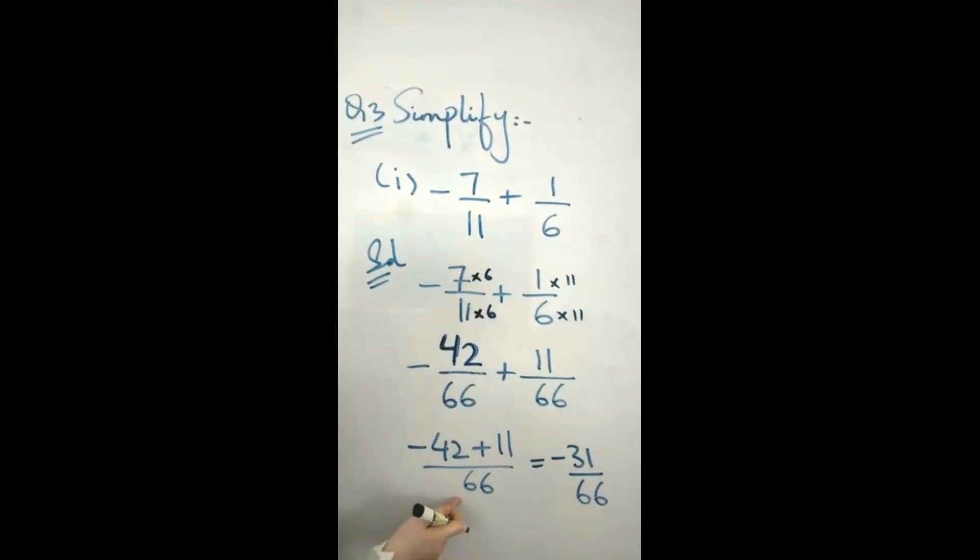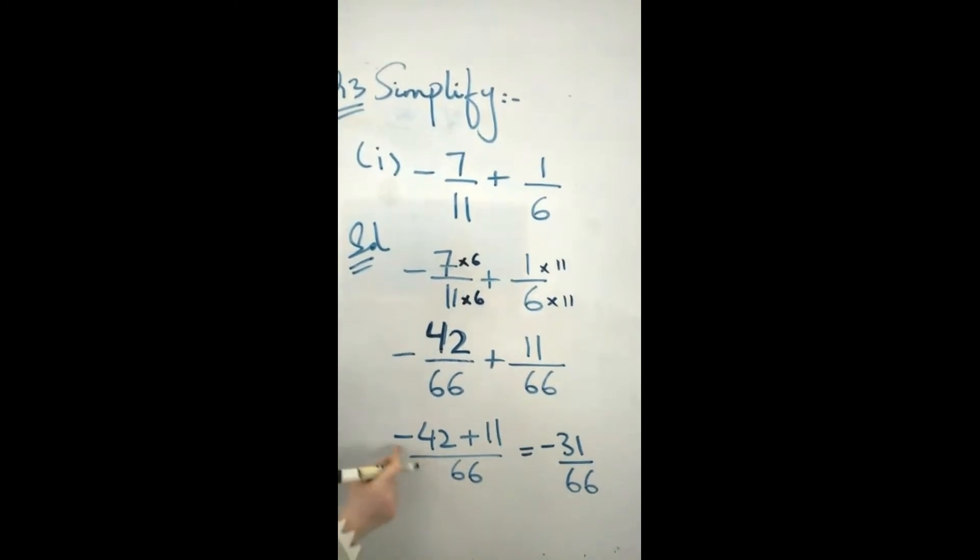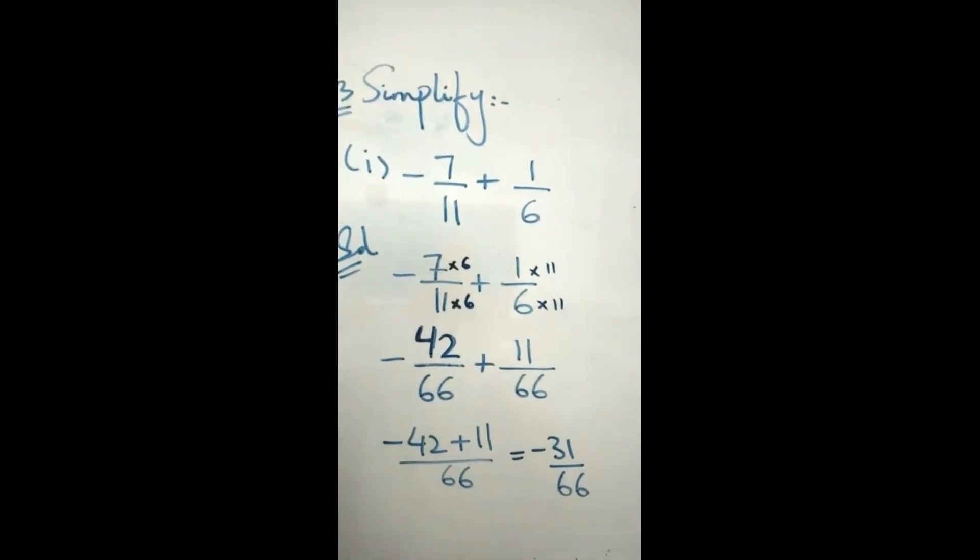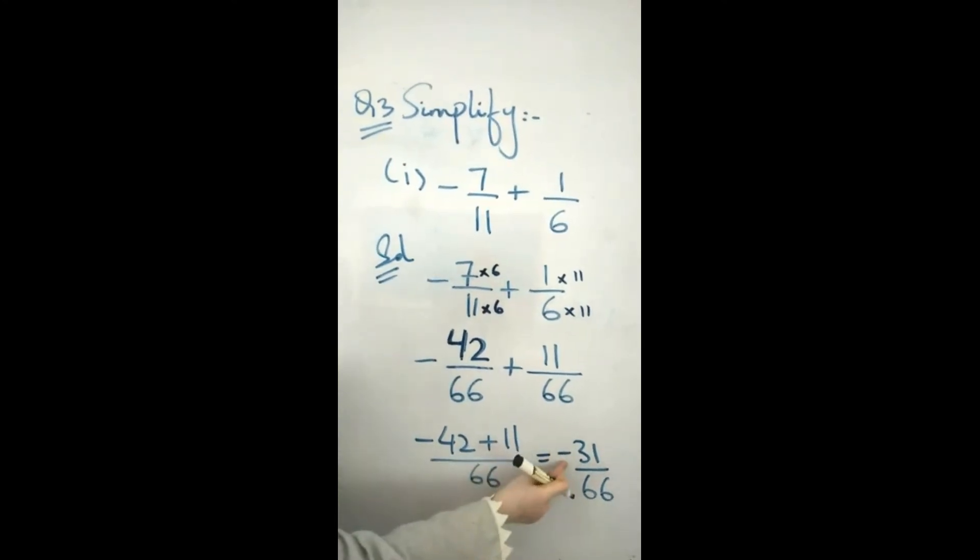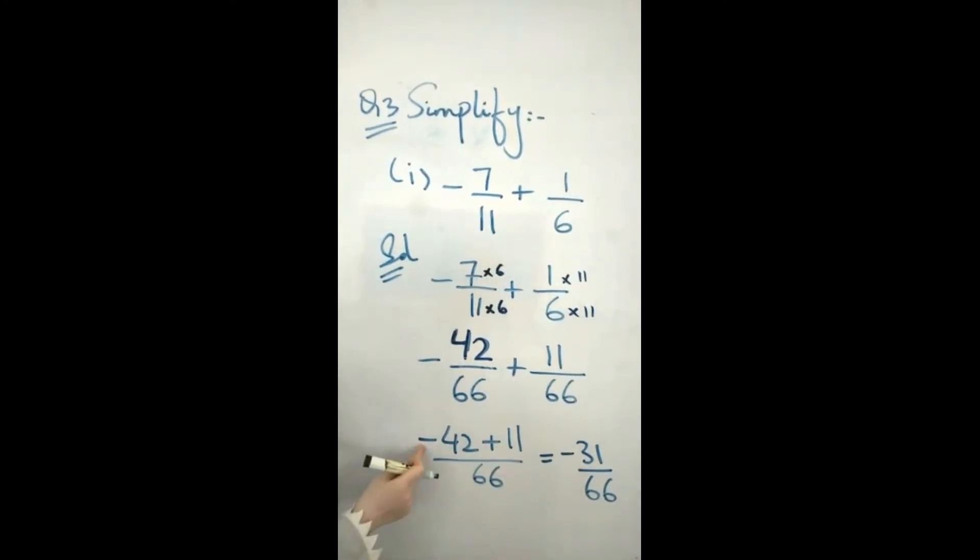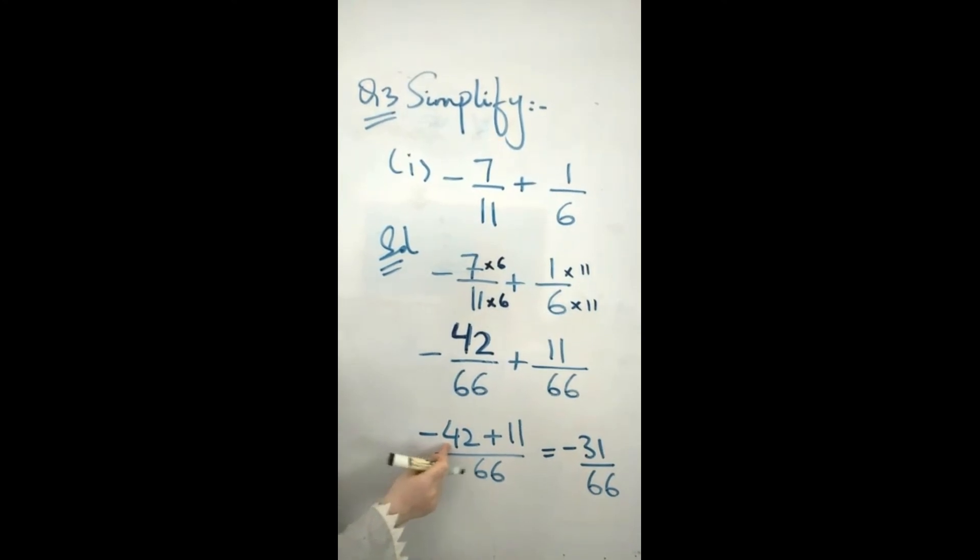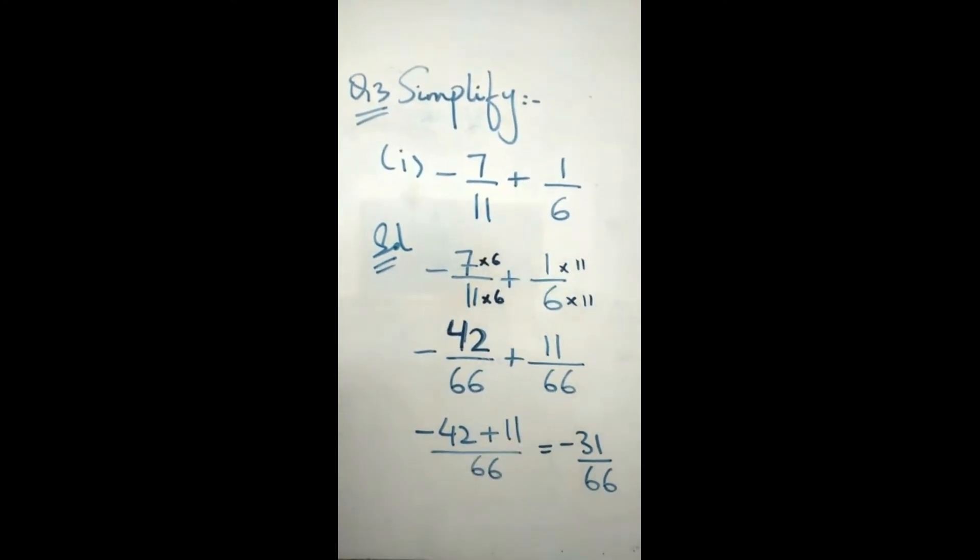That's why I will write 66 as the denominator and -42 + 11 in the numerator. -42 + 11 equals -31. The negative sign comes from the larger number. Therefore, the answer is -31/66. Thank you.